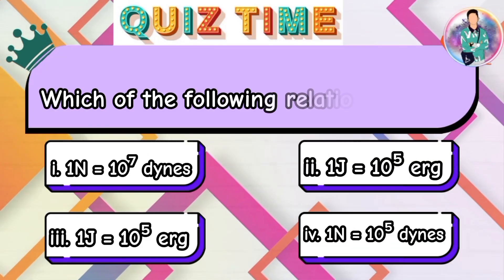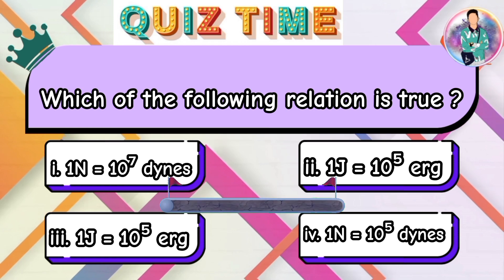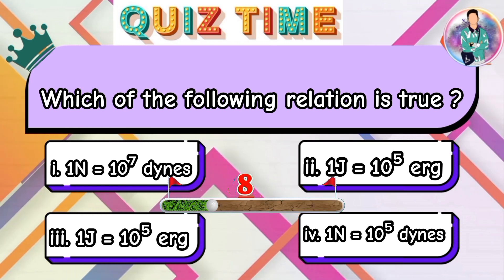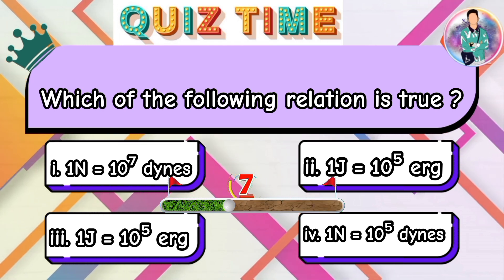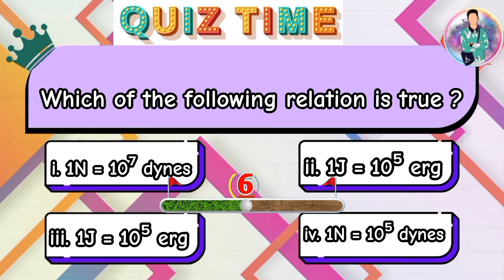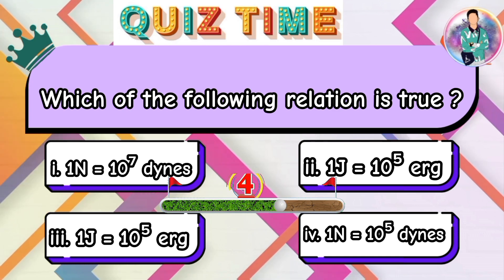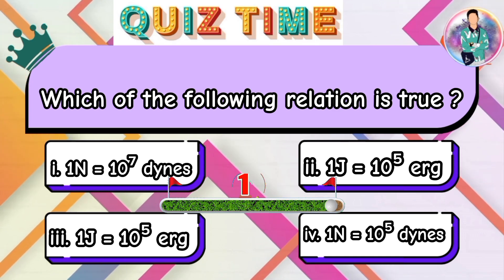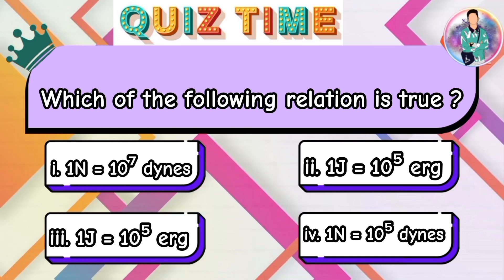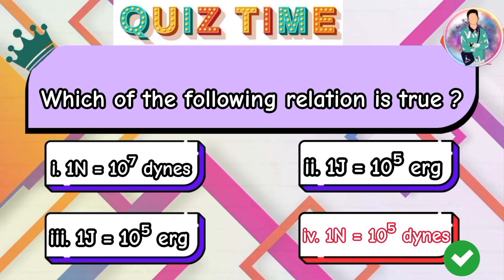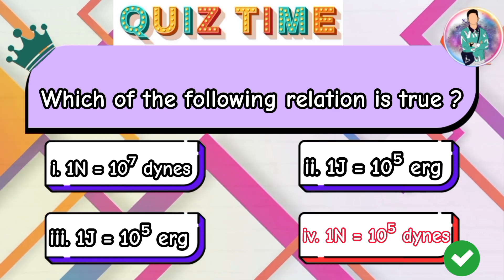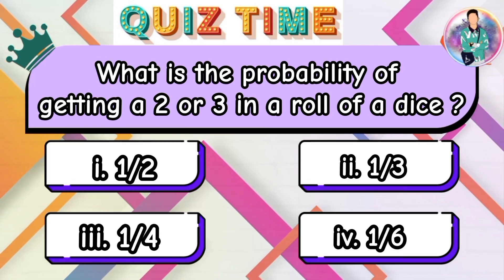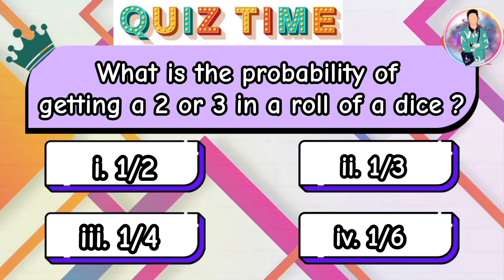Which of the following relations is true? What is the probability of getting a two or three in a roll of the dice?